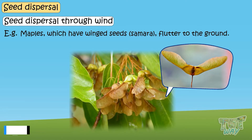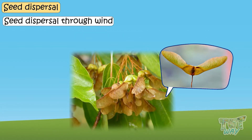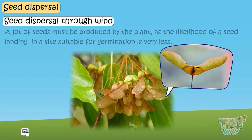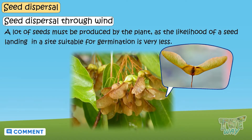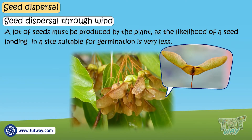Maples have winged seeds that flutter to the ground. An important constraint in wind dispersal is that a lot of seeds must be produced by the plant, as the likelihood of a seed landing in a site suitable for germination is very low.